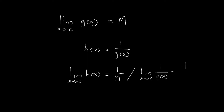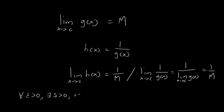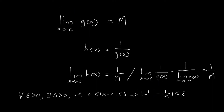So another way to express this statement is to write it out like this. This is equivalent to showing that we can move the limit down to the denominator. In order to establish this result, what I need to show is that for whatever value of epsilon that you come up with, I can always find a value of delta larger than 0, such that if x is within a distance of delta away from c, then h of x is within a distance of epsilon away from 1 over m, or equivalently, 1 over g of x is within a distance of epsilon away from 1 over m.